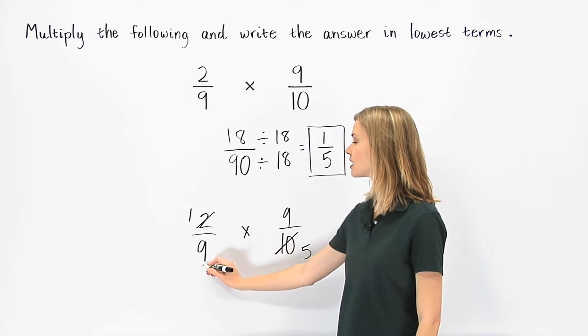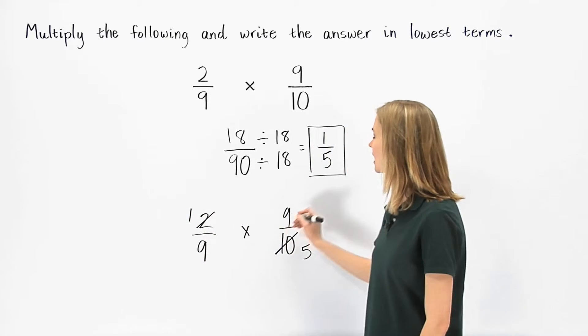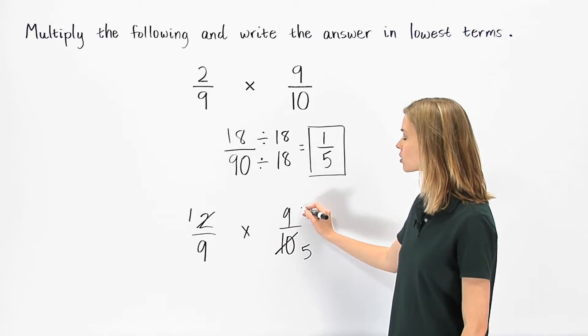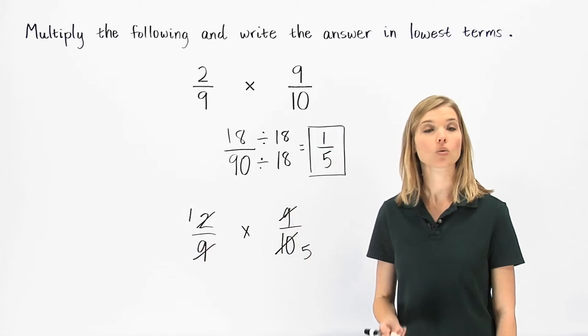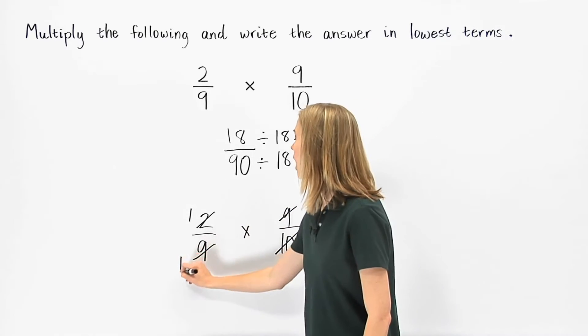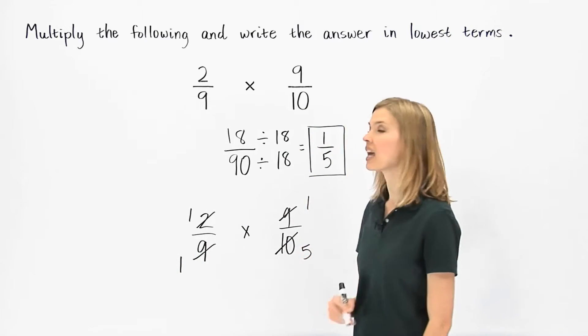And since we have a 9 in the denominator of one fraction and a 9 in the numerator of the other fraction, we can cross-cancel by dividing by their greatest common factor, which is 9, to get 1 and 1.